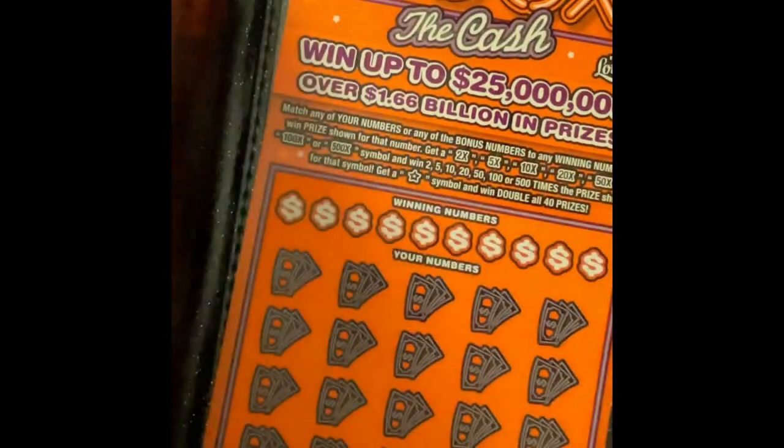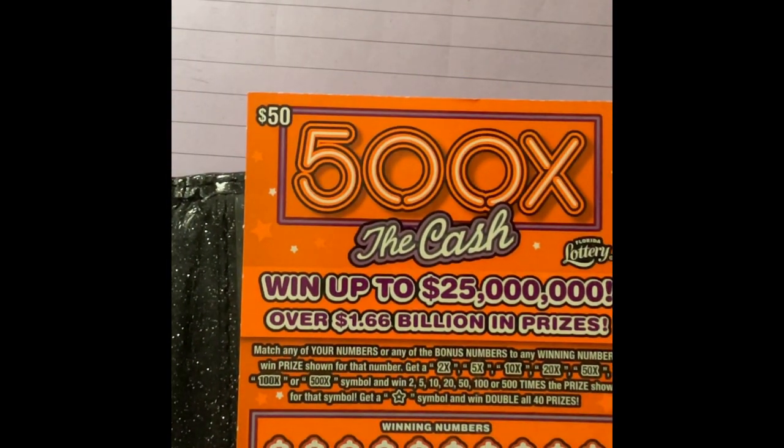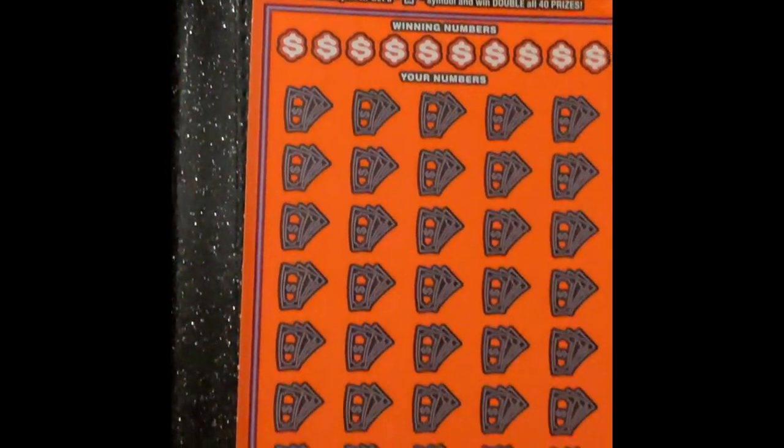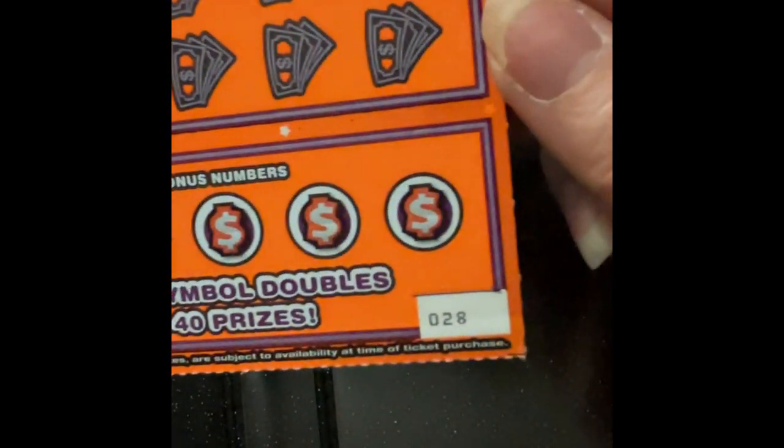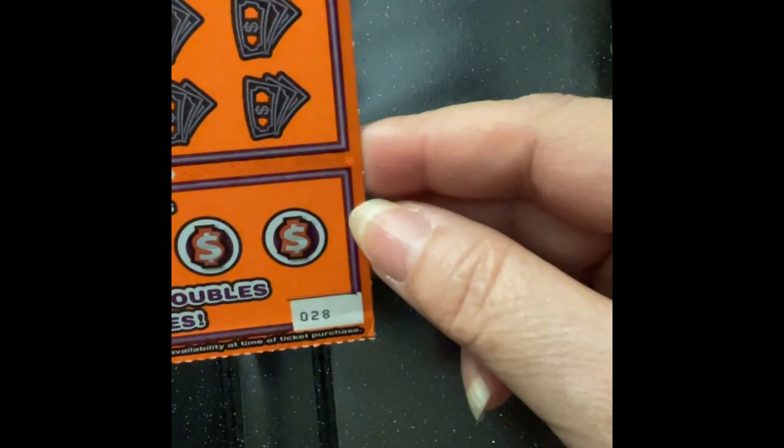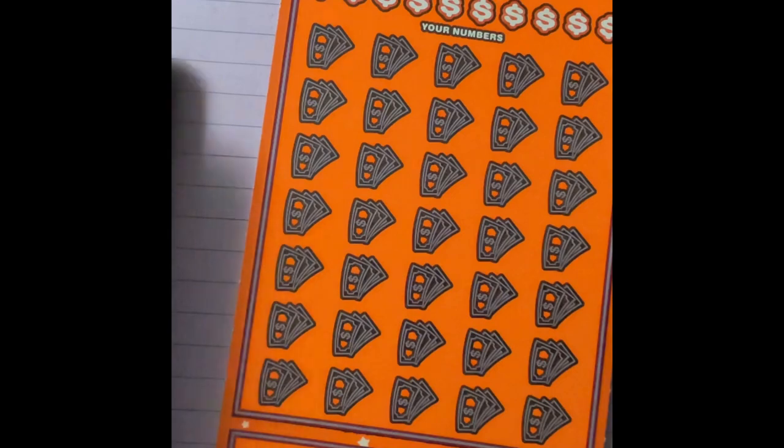And you see it up there, there it is. We have the 500 times the cash. This is known as orange crush here in Florida, and we have ticket number 28. I don't know if it's gonna show up, you might have to watch this one on the TV. There's a lot of numbers to scratch.